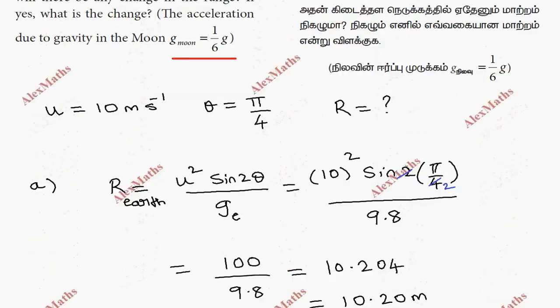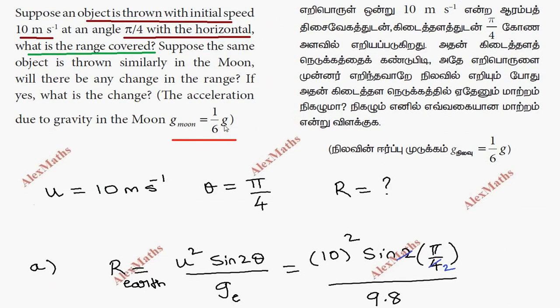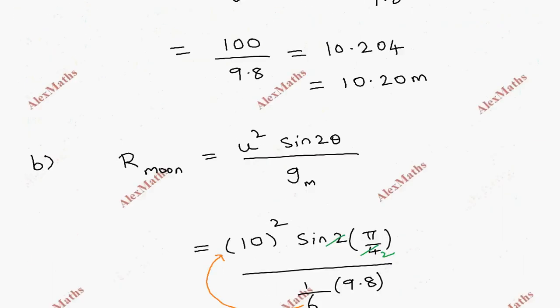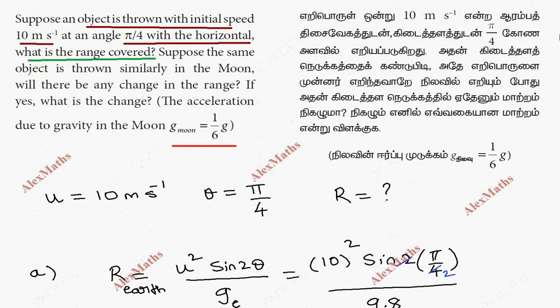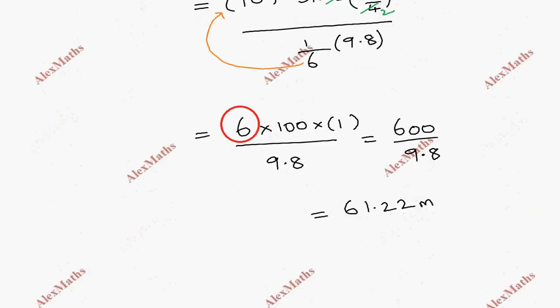The acceleration due to gravity on the Moon is one-sixth of Earth. So the question is: what is the change that we get? Six times. So the range on Moon is six times the range on Earth.